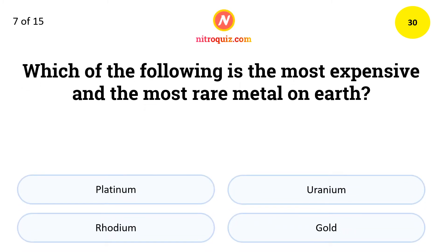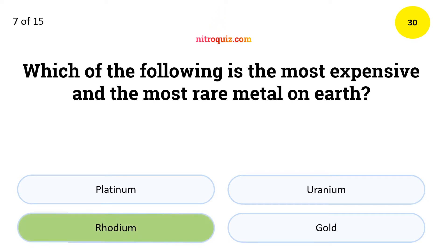Which of the following is the most expensive and most rare metal on earth? The answer is Rhodium.